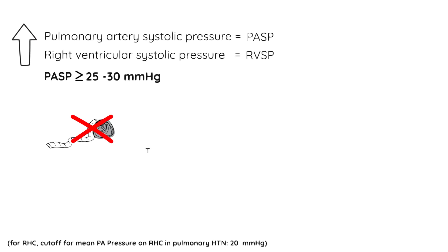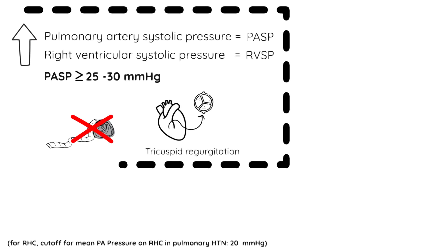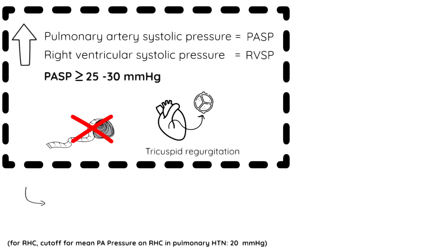They're based on the physics of tricuspid regurgitation, or how fast blood leaks backward through the tricuspid valve. This gives us a ballpark of what the real pressures are, but also leaves room for error. In fact, about 50% of the time, Doppler echo estimates can be off by over 10 millimeters of mercury, compared to right heart cath measurements, which is the gold standard.